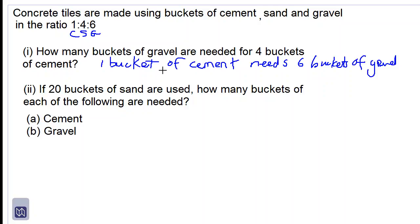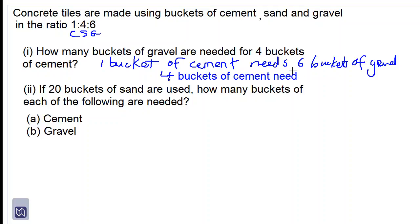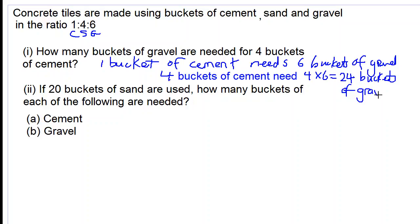So therefore, four buckets of cement would need more gravel. What we do is multiply four by six and we get 24 buckets of gravel. So our answer is 24 for part one.